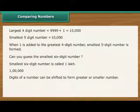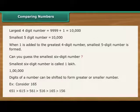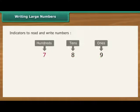Digits of a number can be shifted to form greater or smaller number. Let us see how. Writing large numbers. Sometimes, the large numbers are so large that it becomes difficult to keep track of. Then, it helps to use indicators to read and write large numbers.